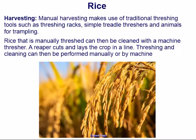Harvesting. Manual harvesting makes use of traditional threshing tools such as threshing racks, simple treadle threshers, and animals for trampling. Rice that is manually threshed can then be cleaned with a machine thresher. A reaper cuts and lays the crop in a line; threshing and cleaning can then be performed manually or by machine.